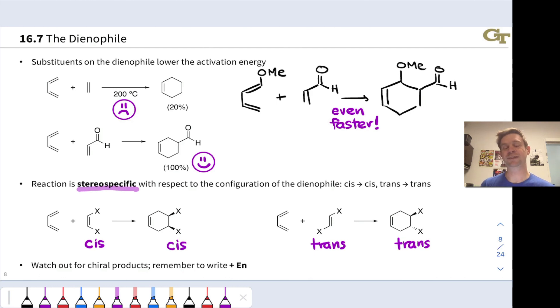And this is a consequence of the concerted pericyclic nature of the reaction. Both sigma bonds are formed at the same time. And so, both X substituents get kind of pushed in the same direction or opposite directions, depending on if they start out cis or trans. Those stereochemical relationships are maintained in the cyclohexene products.